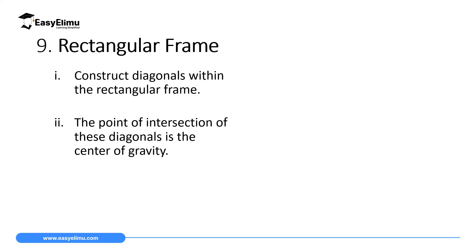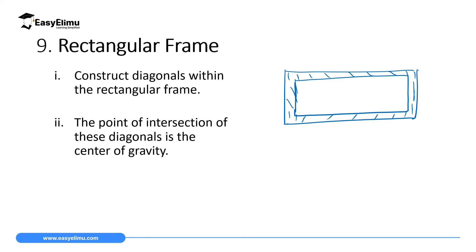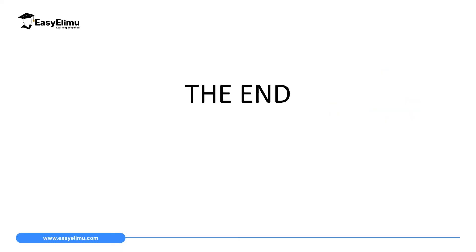Finally, we have a rectangular frame — a rectangle shape with a hole inside and a frame around it. To find its center of gravity, construct diagonals from one corner to the opposite side and another diagonal from the other corners. Where these two diagonals meet is the center of gravity of this frame. That marks the end of our lesson today. In the next lesson we will discuss how to determine the center of gravity of irregular objects.